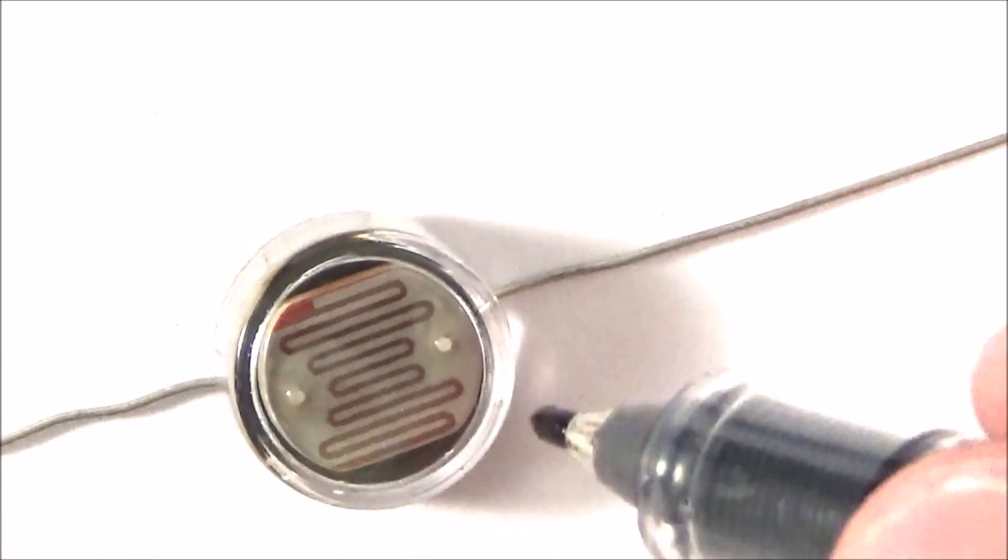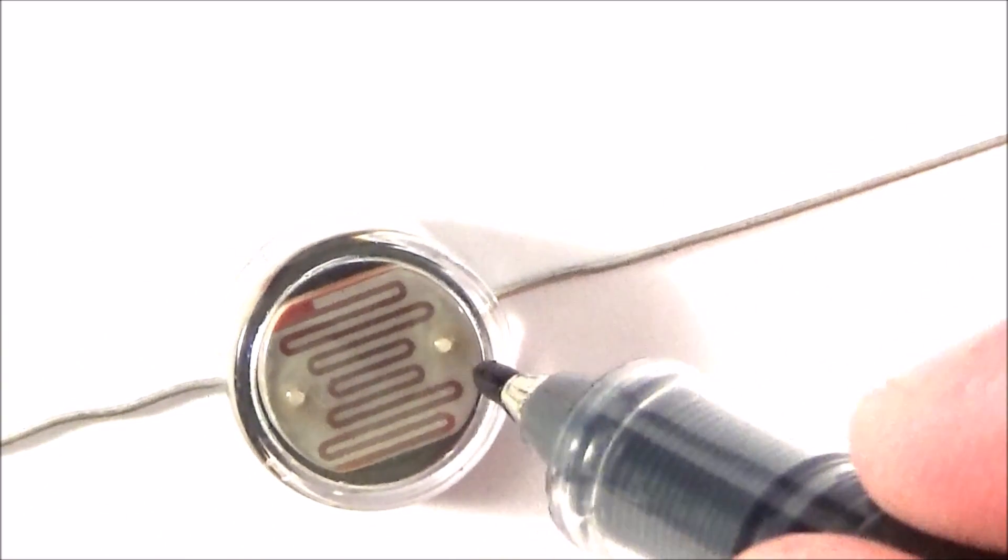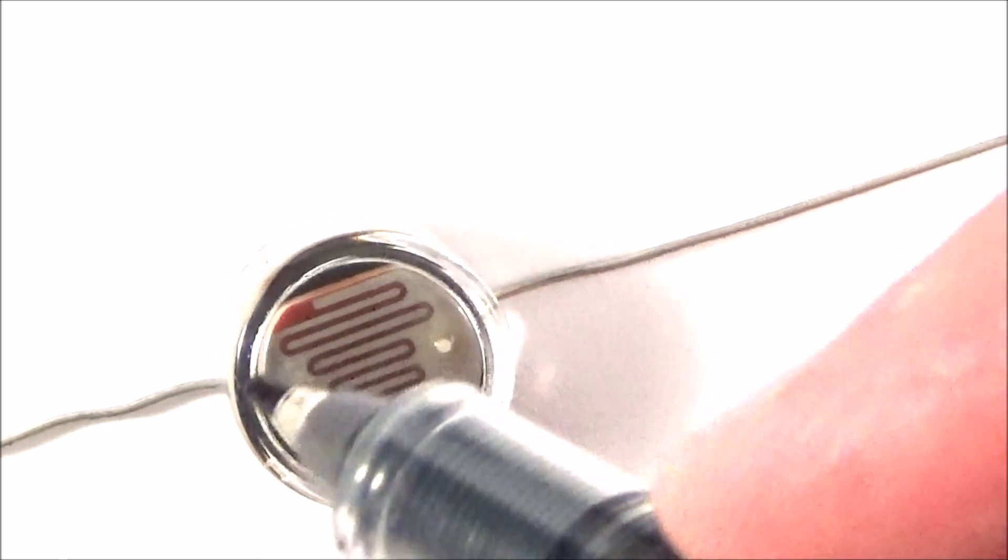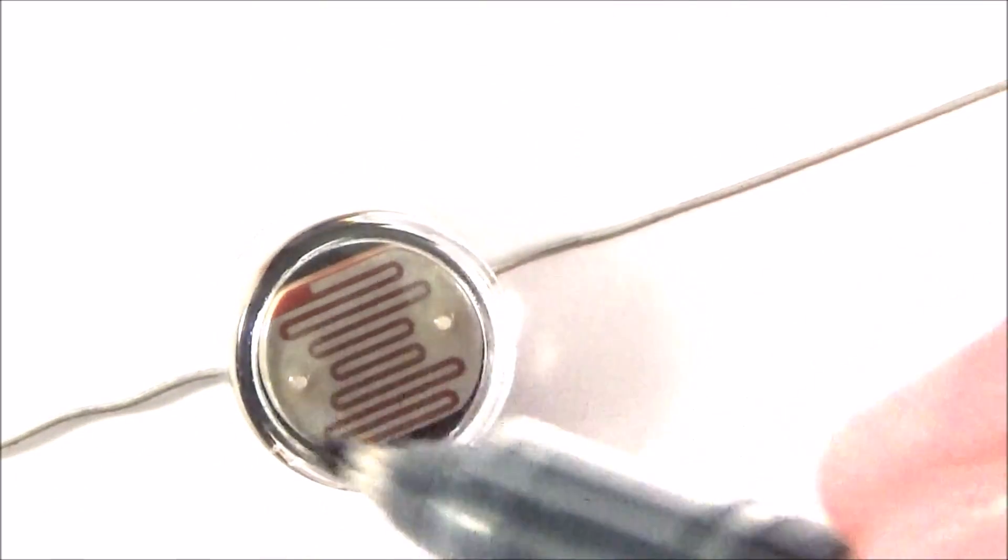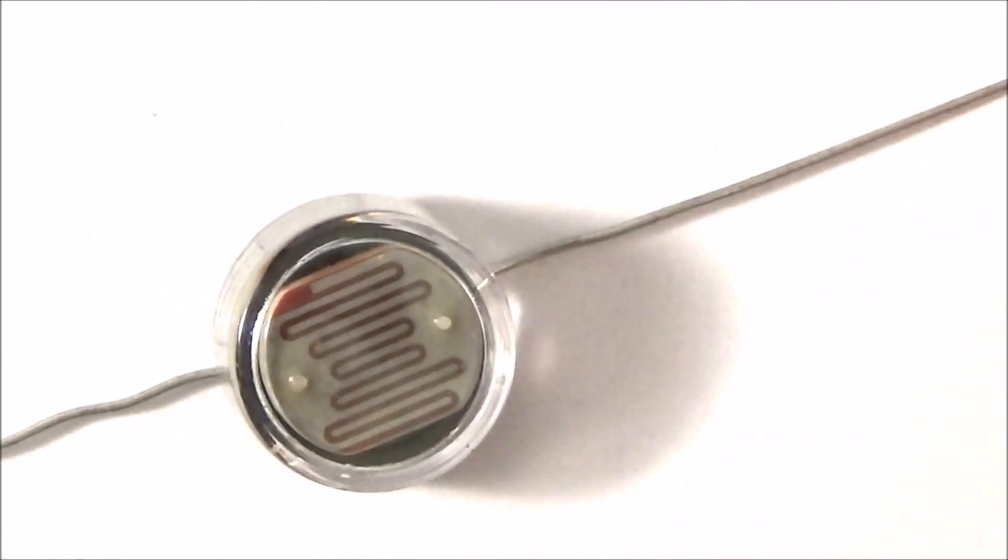What you can see here is some cadmium sulfide which is a gray color. We've got some of the metallic connectors inside it, and this is all underneath a plastic case which acts a bit like a lens to focus the light onto the surface. This works through something called the photoconductive effect.